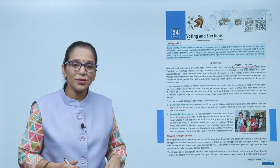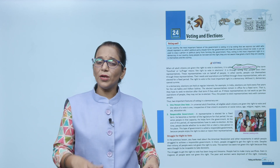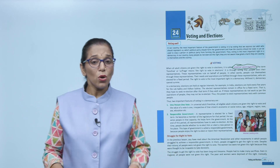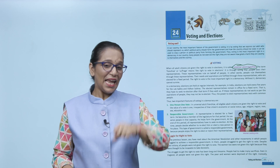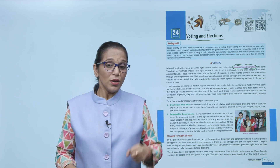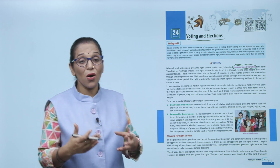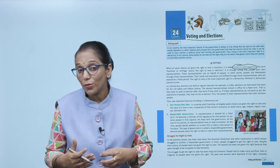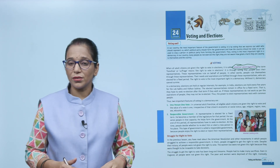These representatives rule on behalf of us. In other words, people rule themselves through their own representatives. Their needs, their goals, their aspirations are fulfilled by these representatives who are elected by the people, for the people, for a fixed time period. Right to vote is the most important and powerful right in democracy. Without it, democracy cannot survive because democracy means people's government.